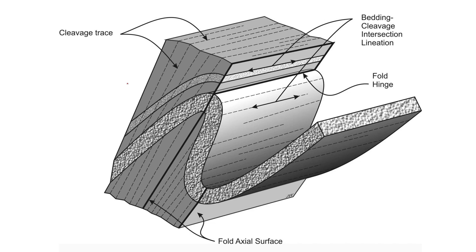These are some important structures we need to plot in a stereonet. You can see some planes like a cleavage plane, a fold limb, an axial plane, a fold axial plane, and others like a bed and fold plane. And you can see some linear features like bedding-cleavage intersection lineation, a fold hinge, and some other features like a fold axis.